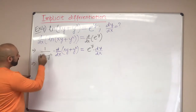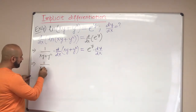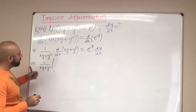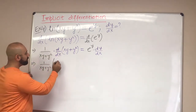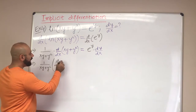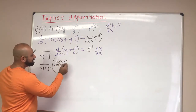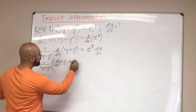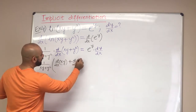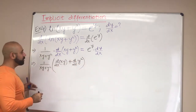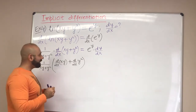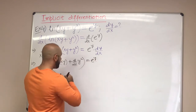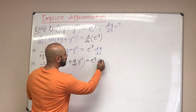Now rewriting the left side: we have 1/(xy + y²), and in parentheses we break down d/dx of (xy) plus d/dx of (y²), doing it in steps to avoid mistakes. For d/dx of (xy), we can see it's a product so we'll use the product rule. The right-hand side stays as e^y · dy/dx.